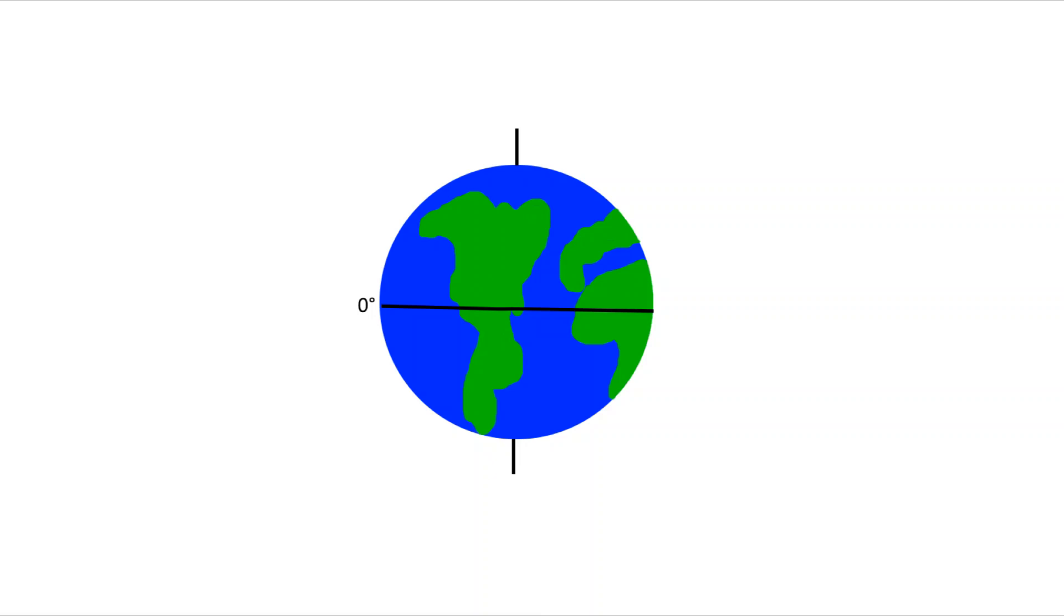Now, imagine that the equator is 0 degrees. The North Pole is, of course, 90 degrees away from it, while the South Pole is, of course, also 90 degrees away, in the opposite direction. So, 90 degrees north and 90 degrees south.